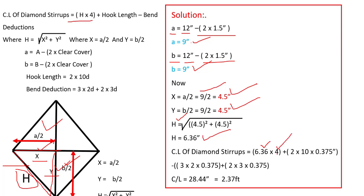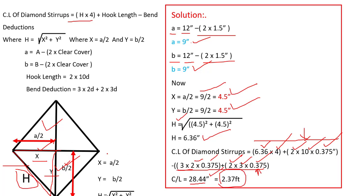Now putting it into the formula: cut length = 6.36 × 4 + 2 × 10 × d - (3 bends × 2d for 90° + 2 bends × 3d for 135°). Adding the hook lengths and subtracting the bend deductions gives a total cut length of 28.44 inch, or 2.37 feet. This is how we find the cut length of a diamond stirrup.